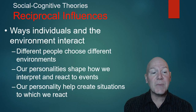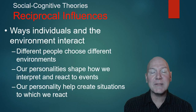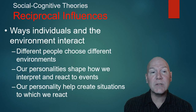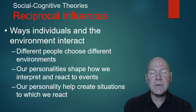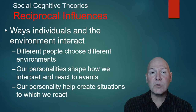Our personalities also shape how we interpret and react to events. If we are quick to react strongly to something, that changes how other people react. We also create situations we then react to — for example, if we see someone as angry, we may unconsciously give them a cold shoulder, which provokes their angry response, actually creating that anger. All these interactions between environment and self make up the social perspective.